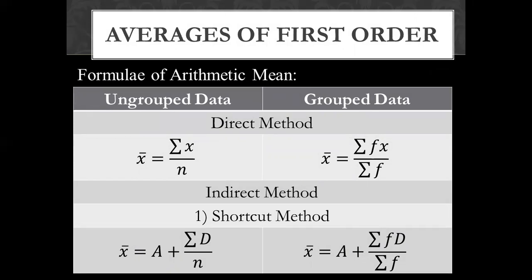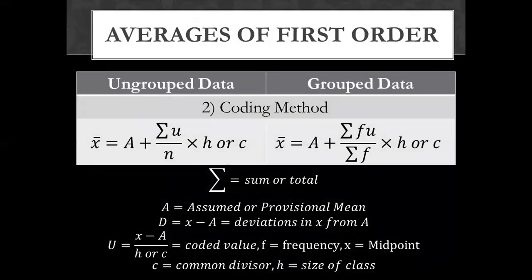For the indirect shortcut method, ungrouped data uses: x-bar equals A plus summation d over n. For grouped data: x-bar equals A plus summation fd over summation f. The coding method for ungrouped data uses: x-bar equals A plus summation u over n, multiplied by H or C, where H or C means the size of the class interval.